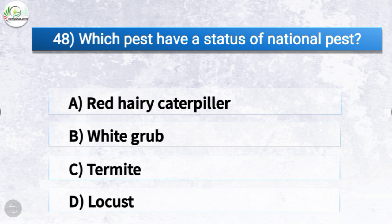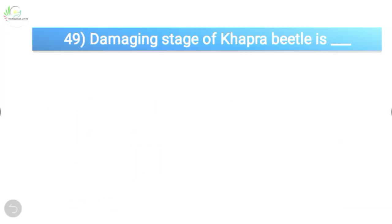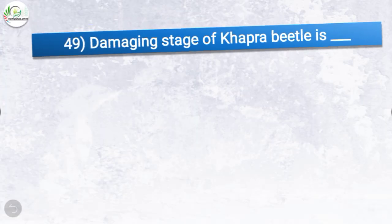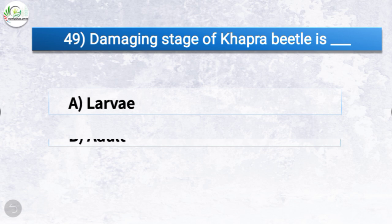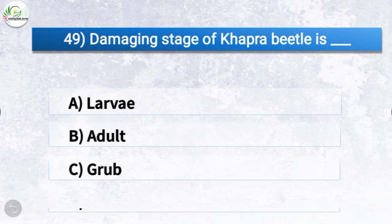Question number forty-eight: which pest has the status of national pest? The options are red hairy caterpillar, white grub, termite, or locust. The correct answer is option B, white grub. So white grub has the status of national pest.